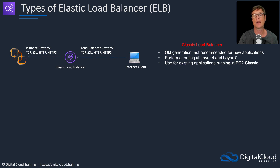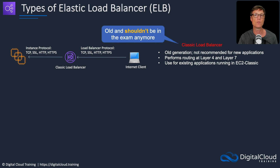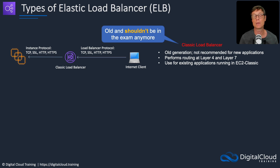Next we have the classic load balancer, the CLB. You really shouldn't see this on the exam anymore — there could very occasionally be a reference to it, but it's very unlikely to be the correct answer. AWS don't really want you using this anymore; they'd prefer you use an ALB or NLB for the same use cases you might have used a CLB for before the newer generations came along. The CLB performs routing at layer four and layer seven, but doesn't have anywhere near the intelligence of the ALB or the NLB.